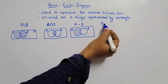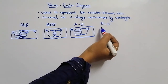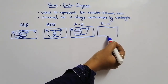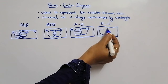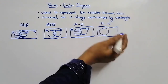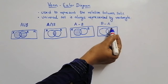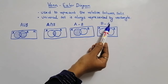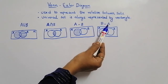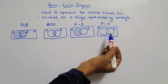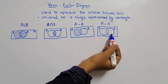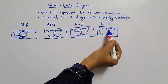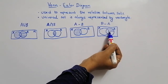Now let us consider B minus A. Again we have a rectangle with set A and set B inside. B minus A means all the elements in B, avoiding the elements in A. Avoid the overlapping part with A and take only the remaining elements in B.